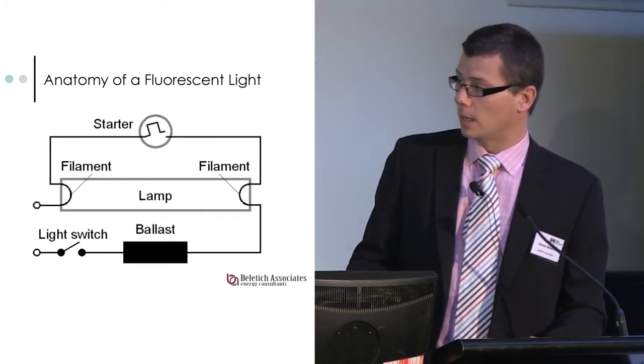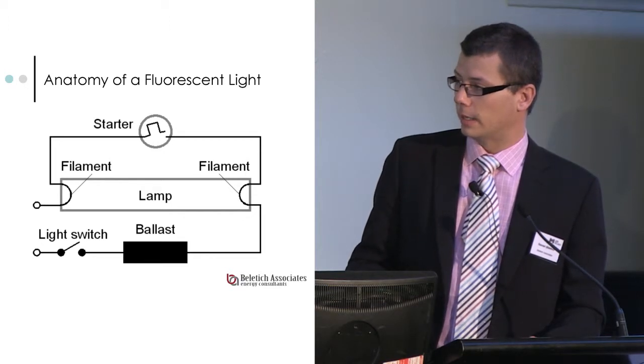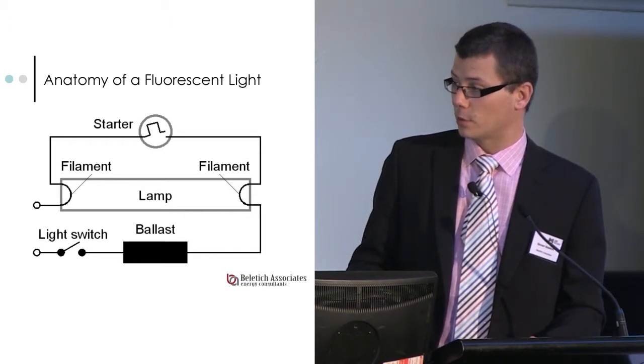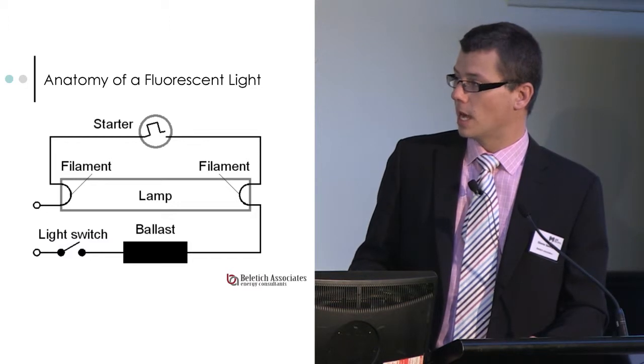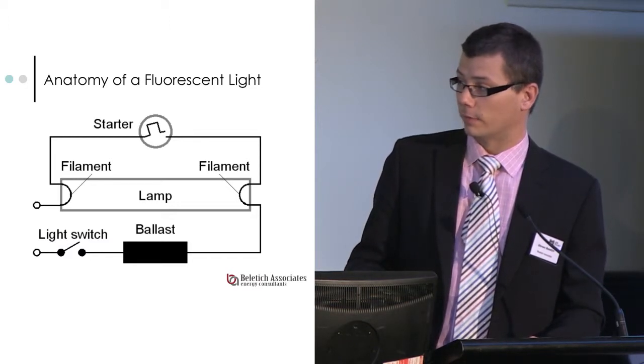These two little white circles here, that's the 240 volt supply. So the power comes in here through the light switch, goes through a ballast, and then it goes through the tube back to the other side of the 240 volt supply.